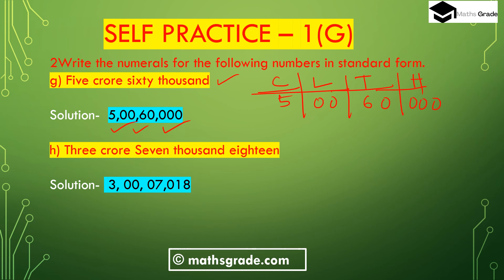Part (h): 3 crore 7 thousand 18. In the crore place: 3 (single digit). In the lakh place there is no digit so we place 00. In the thousands place: 7 thousand (zero seven, two digits). In the hundreds place: 18 (zero one eight). So the number is 3,00,07,018.